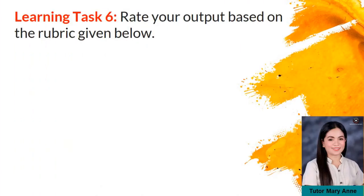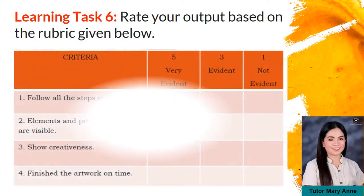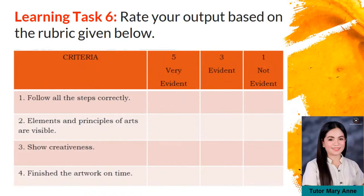Learning task 6 — rate your output based on the rubric given below. Here are the criteria: Number 1 — follow all the steps correctly; Number 2 — elements and principles of art are visible; Number 3 — show creativeness; Number 4 — finish the artwork on time. The highest score is 5 — very evident; 3 — evident; and 1 — not evident.